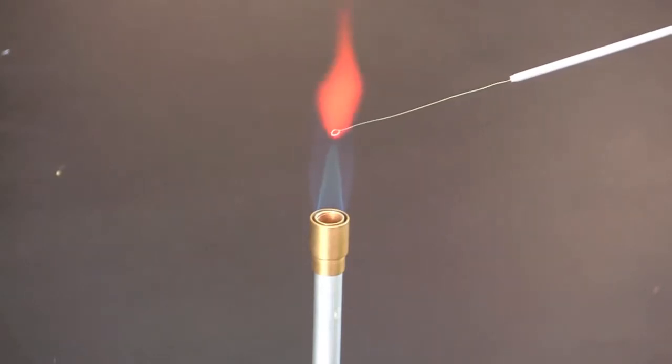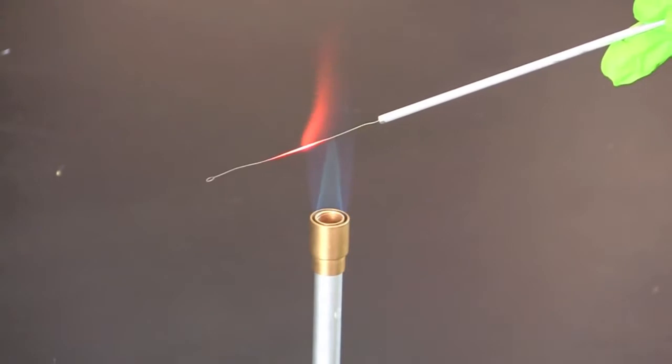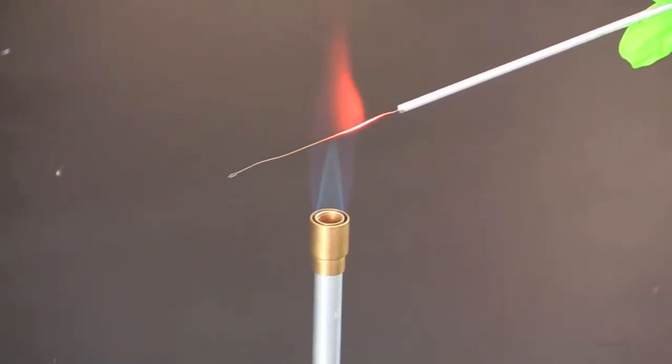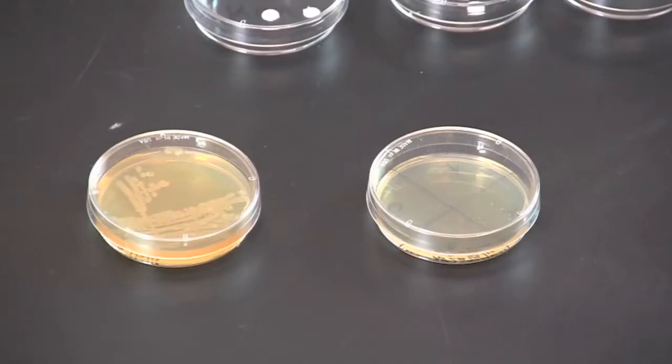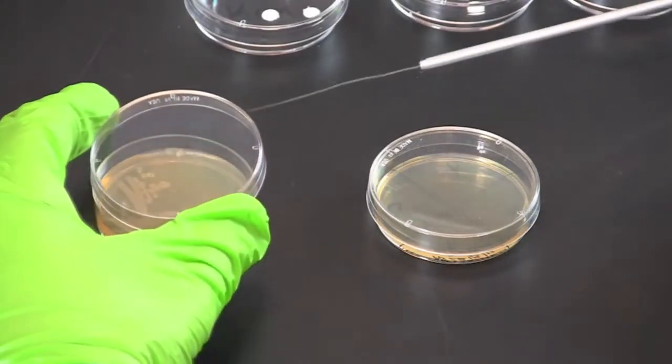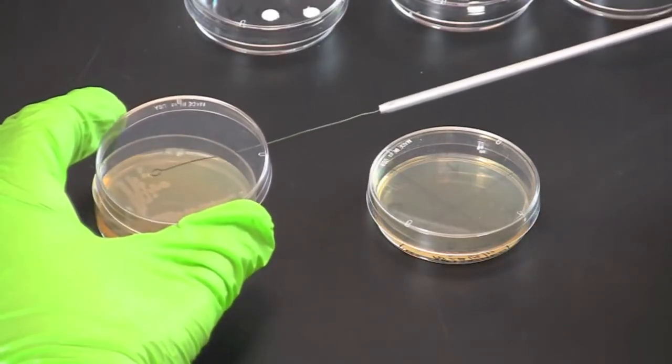Flame an inoculating loop to sterilize and let it cool. You can lightly touch the loop on an empty spot on the bacterial plate to make certain the loop is cool.